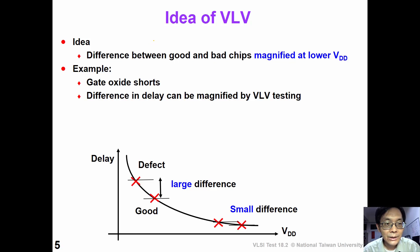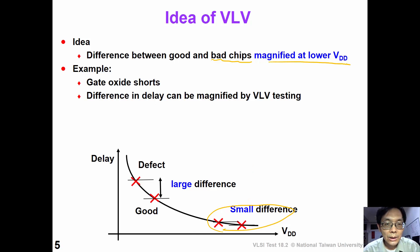The idea of VOV is like this: we want to distinguish good chips from bad chips. However, sometimes the bad chips are just a little bit weaker. If we want to detect them at nominal voltage, the difference between a good chip and a defective chip is very small and very difficult to distinguish. If we lower the voltage, then the difference can be magnified, and it's easier for us to tell the difference.